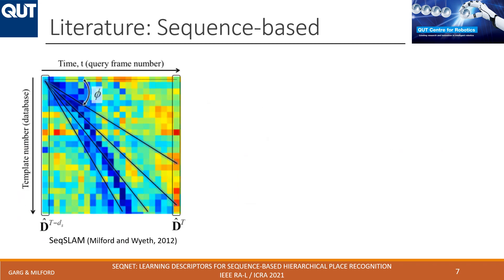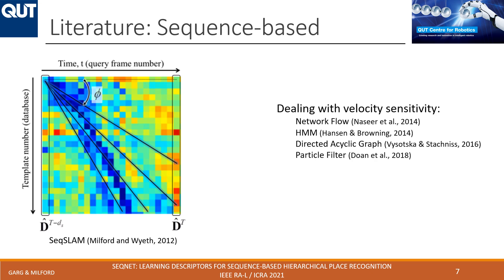There are a number of methods for visual place recognition involving sequence-based imagery. One of the oldest is SeqSLAM, where a distance matrix is constructed with rows representing different database images and columns representing different query images. The task is to find matching places along the diagonal of this matrix. Key challenges include robustly representing individual places as single points in this matrix and dealing with the velocity sensitivity problem. Several methods have followed and improved upon this approach.